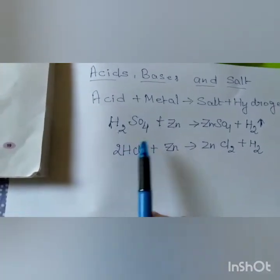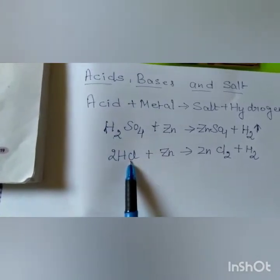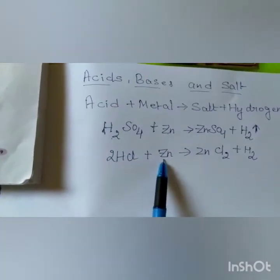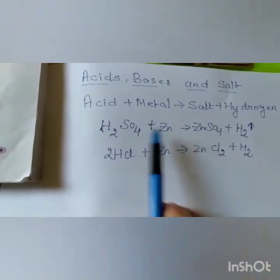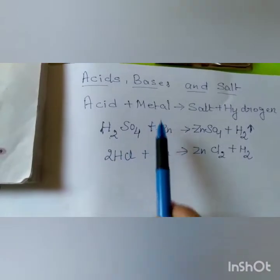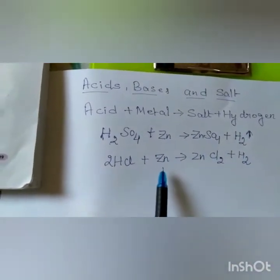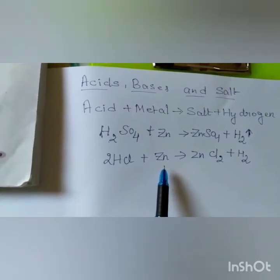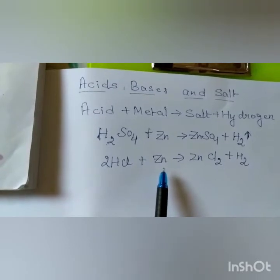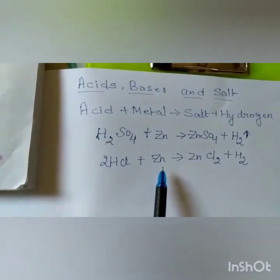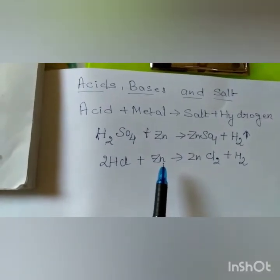Now here you can take another acid. You have taken hydrochloric acid and you add zinc — you will get salt zinc chloride plus hydrogen gas is evolved. So this is also acid plus metal giving salt and hydrogen gas. But that metal has to be above hydrogen in the reactivity series. The metals which are placed below hydrogen in the reactivity series do not liberate hydrogen.